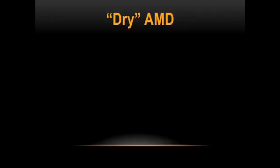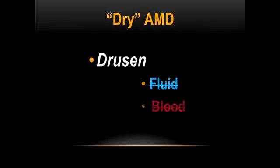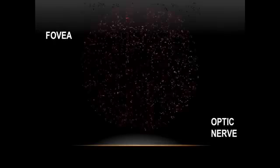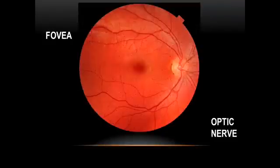Dry type is characterized by accumulation of debris under the macula called drusen, with no associated leakage. Let's quickly review what a normal retina looks like, and then I'll show you actual cases of AMD to illustrate dry versus wet.